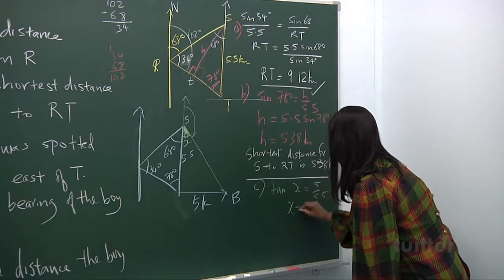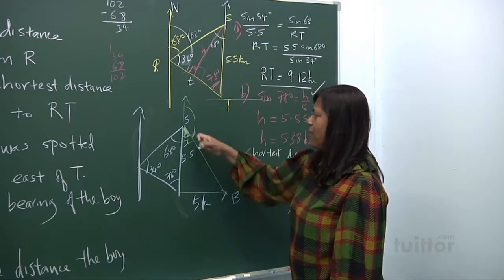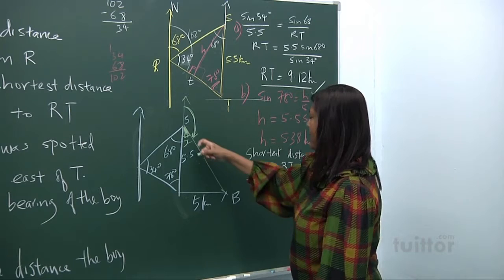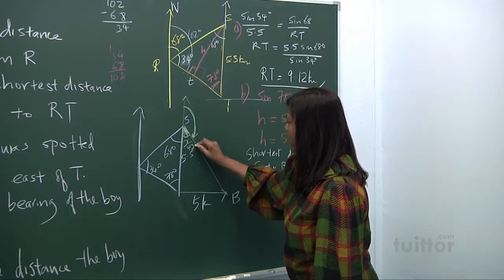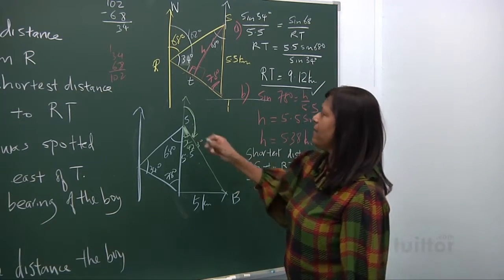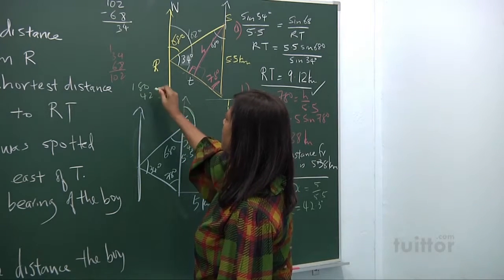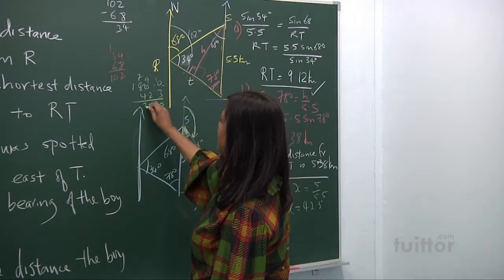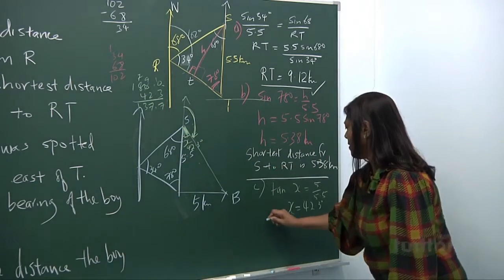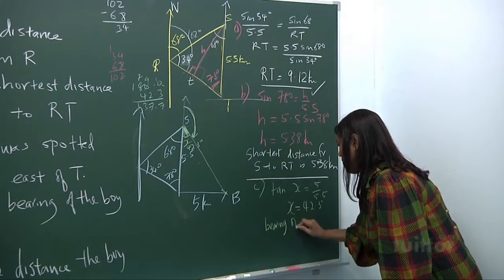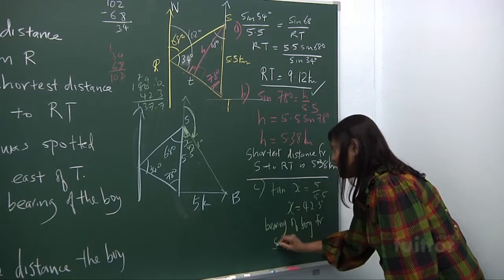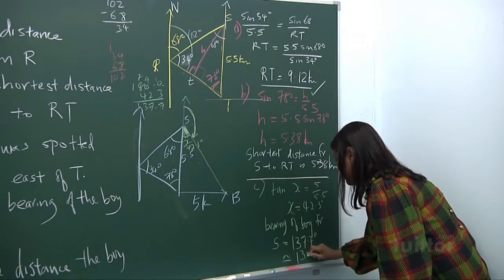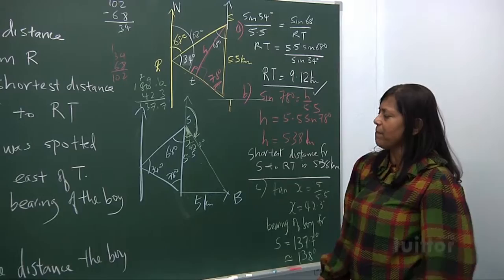So x is 42.3 degrees. So the bearing of this boy from S will be this whole angle. So the bearing will be 180, this is 42.3, so this angle will be 180 minus 42.3. Take away, borrow. So this will be 7, this will be 9, this will be 10. You get 7, 7, 3, 137. Bearing of boy from S is 137.7 degrees. You can round up to 138 degrees. So that's the bearing of the boy from S.